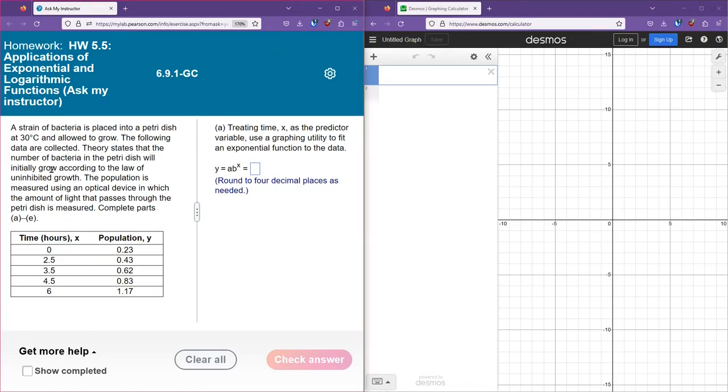Theory states that the number of bacteria in the petri dish will initially grow according to the law of uninhibited growth. The population is measured using an optical device in which the amount of light that passes through the petri dish is measured. We're going to have parts A through E.